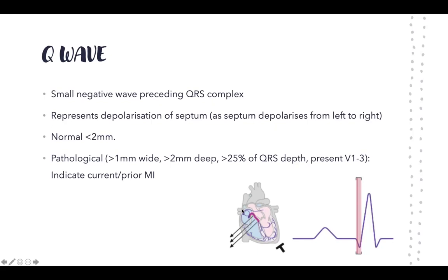After the AV node, electrical signals start from the SA node, go to the AV node, and travel down the bundle of His, breaking into the two bundle branches. As it passes through the bundle of His, it depolarizes the septum of the heart — the structure in between — from left to right, as the vectors shown indicate.